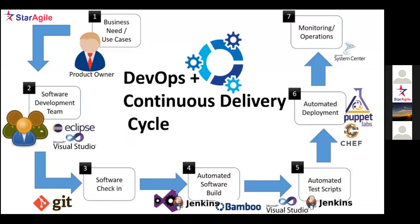The Product Owner gets requirements from the business and converts them into technical form, then hands them over to the development team. The development team works on the design and starts coding. While writing code, they use tools like Eclipse or Visual Studio — for example, Visual Studio or Eclipse for .NET or Java applications on a Windows platform.